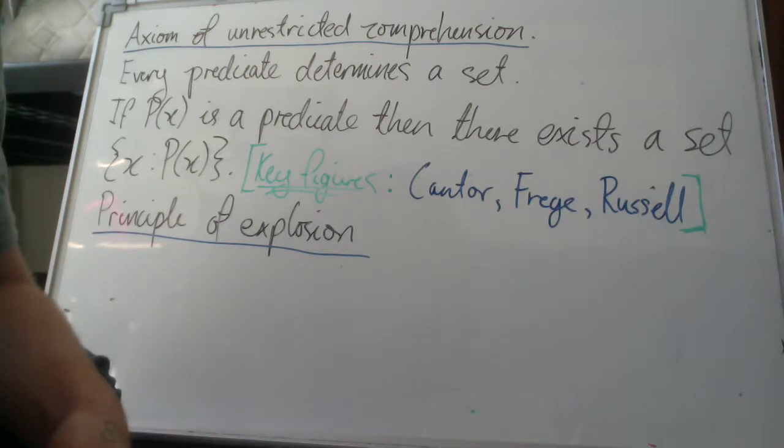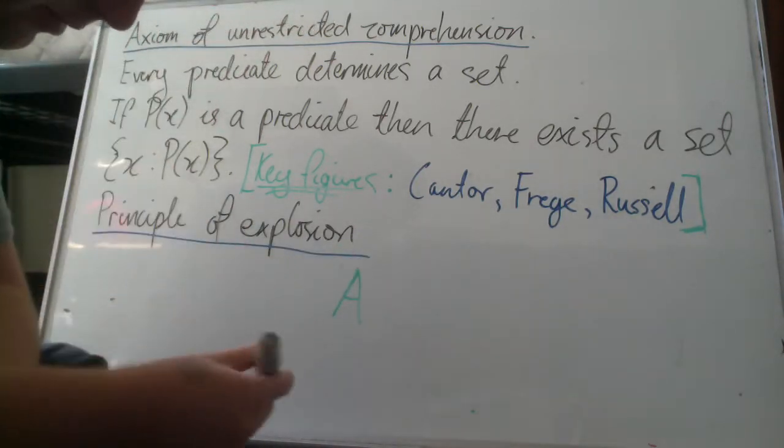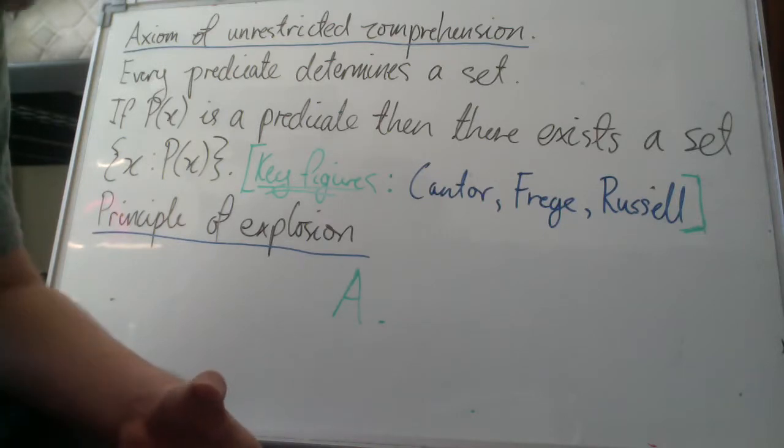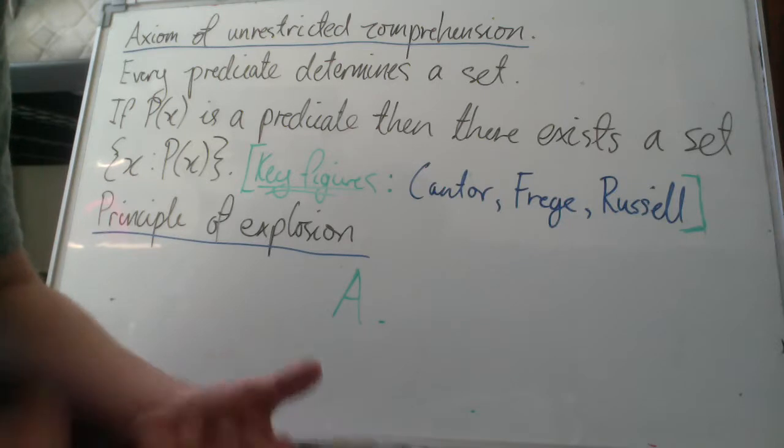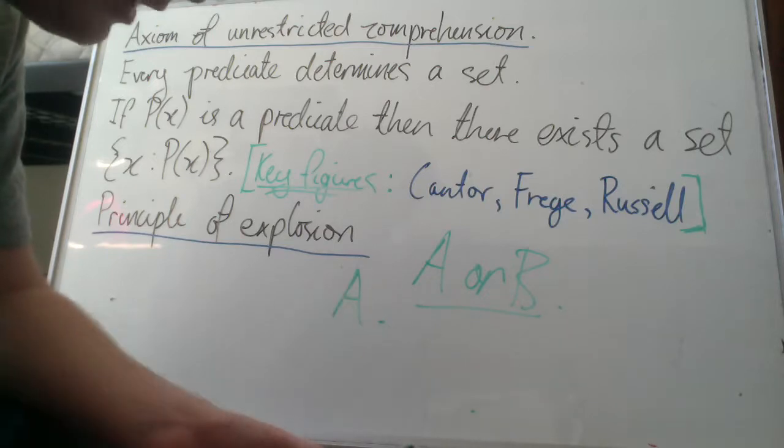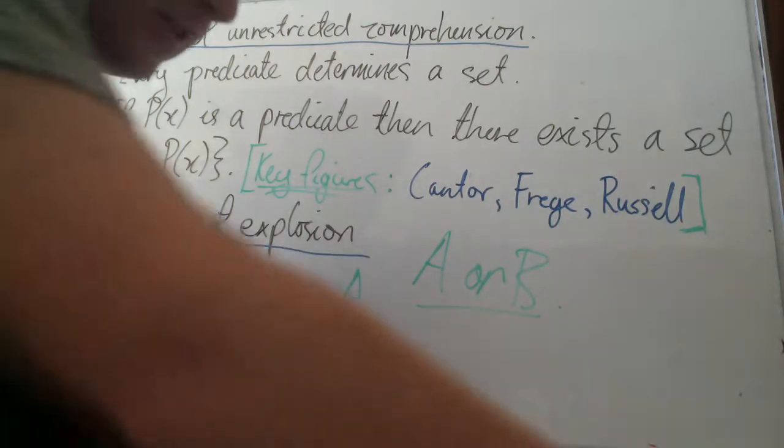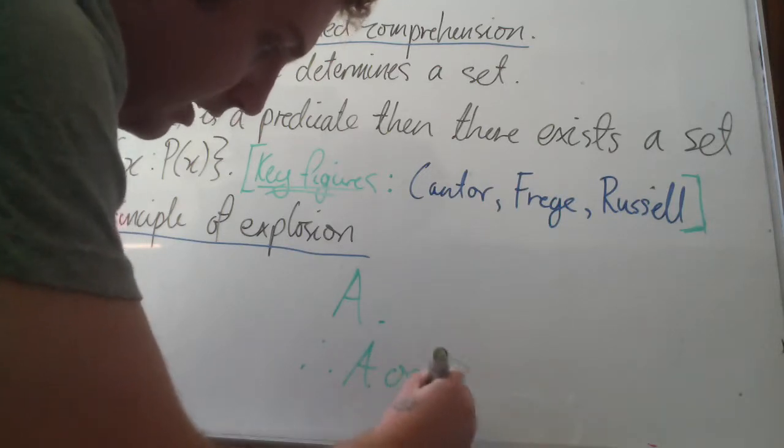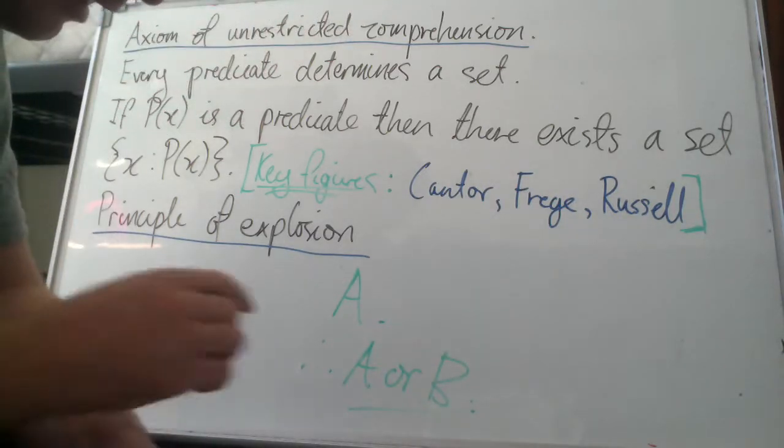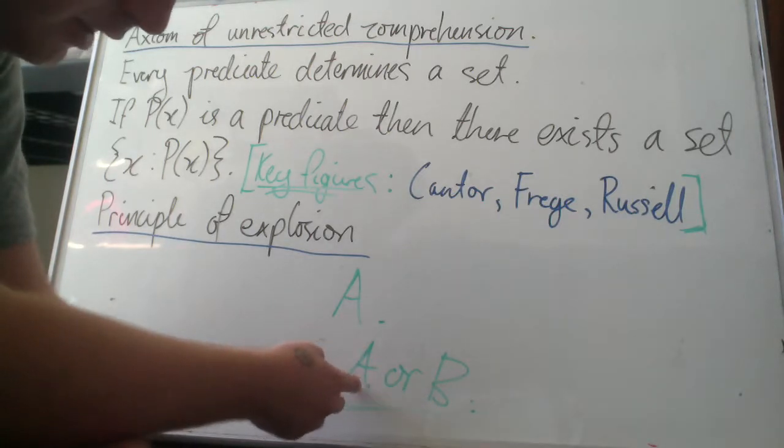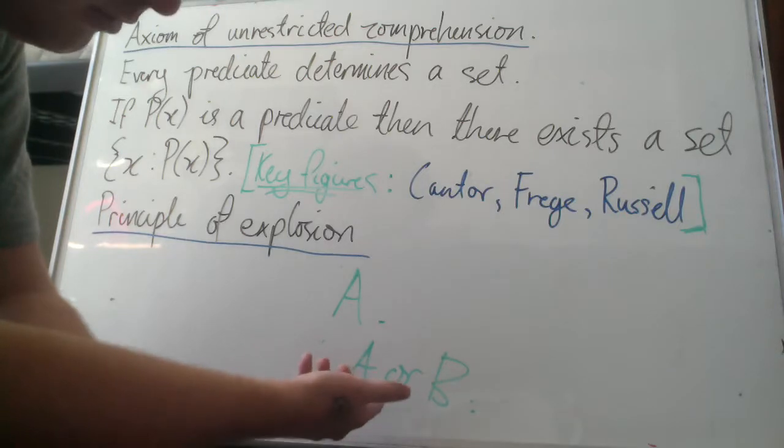The next concept is called disjunction introduction. If we have a statement A and we know that A is true, we may append to A any other statement with disjunction or inclusive or. If we have A and we know A is true, then we can conclude A or B for any B. This makes sense because A is true, therefore A or B is true, so one of the disjuncts must be true hence the whole disjunction must be true.